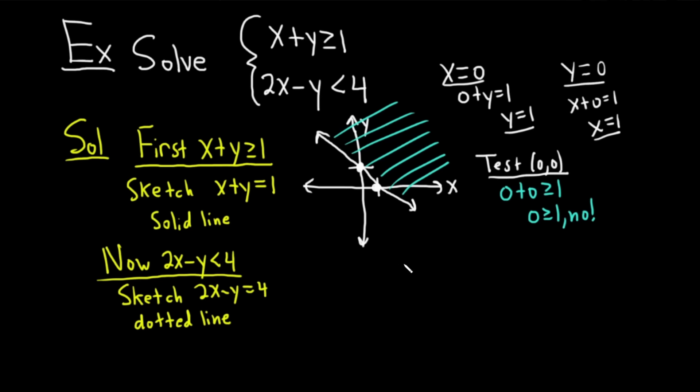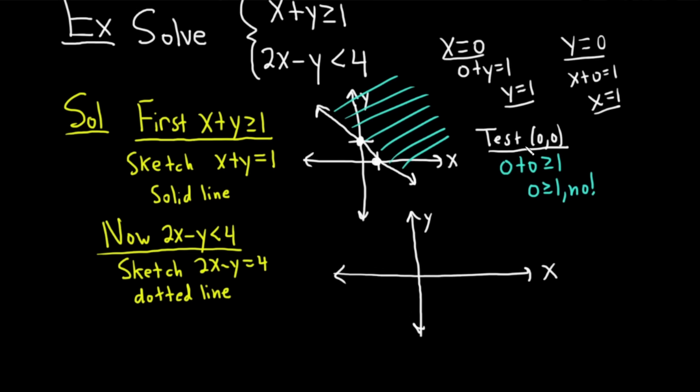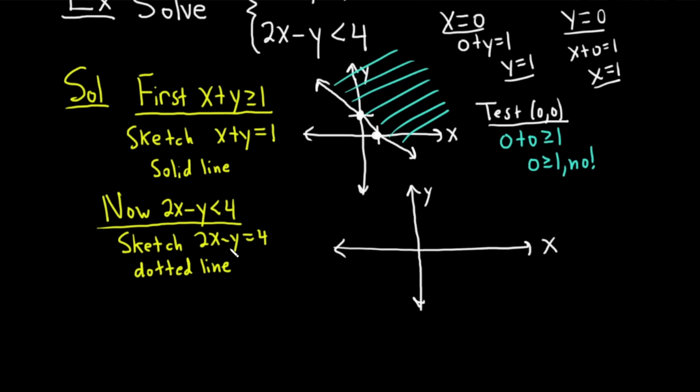I'm going to do this sketch down here. Here's the y-axis, here's the x-axis. As before, let's plug in 0. Let's plug in x equals 0. When we do that, we get 2 times 0, which is 0, minus y equals 4, so y is equal to negative 4. When x is 0, y is negative 4. I'm just going to put a negative 4 here to make it easier on us.